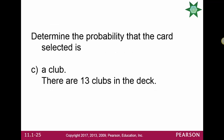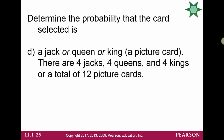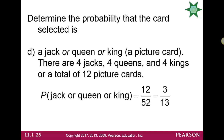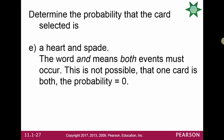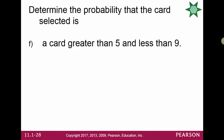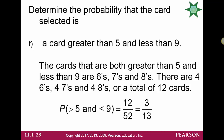The probability of getting a jack, queen, or king — that is, a picture or face card — is 12 out of 52, or 3 over 13, since there are 12 face cards in total. The probability of getting a heart and a spade cannot happen together; these are disjoint or mutually exclusive events, so the probability is 0. The probability of getting a card greater than 5 and less than 9 — the 6s, 7s, and 8s, with 4 of each — gives 12 cards, so the probability is 12 over 52, or 3 out of 13.